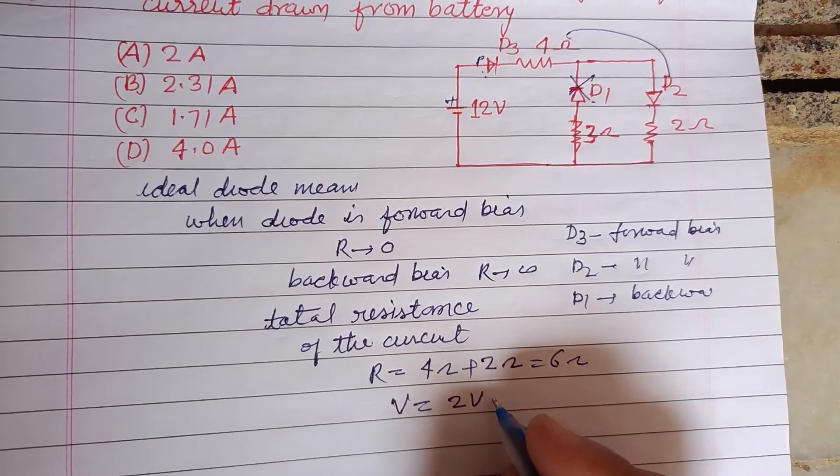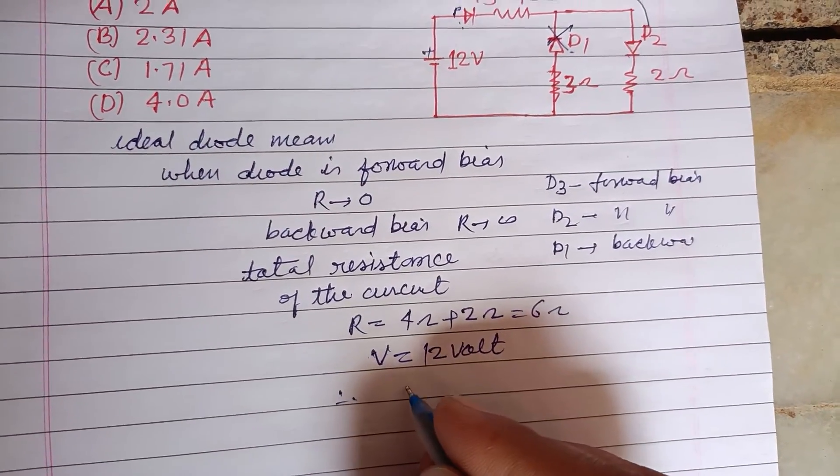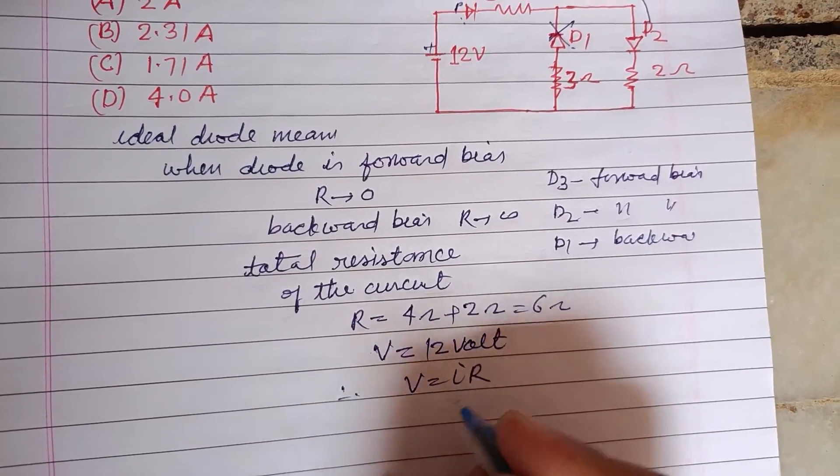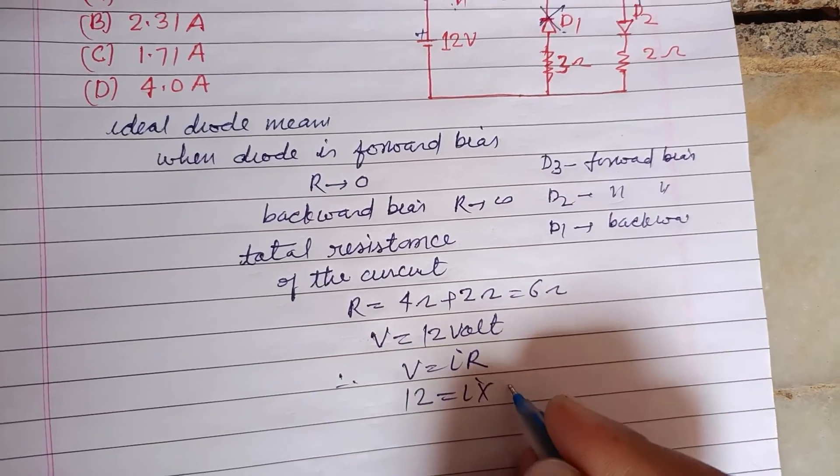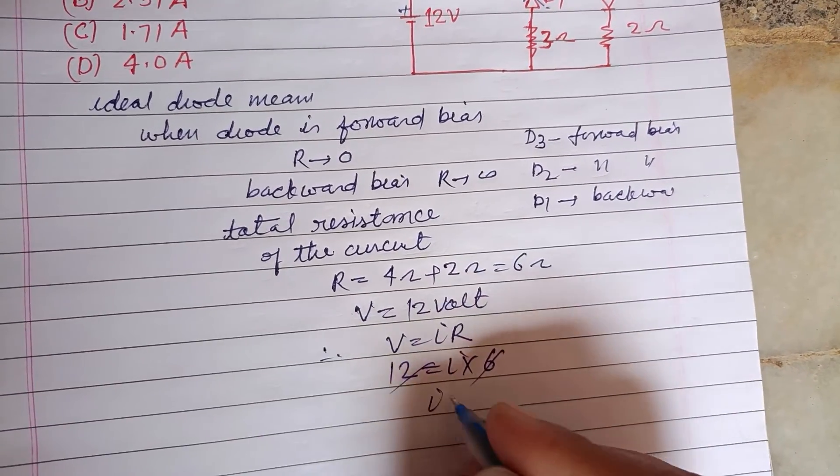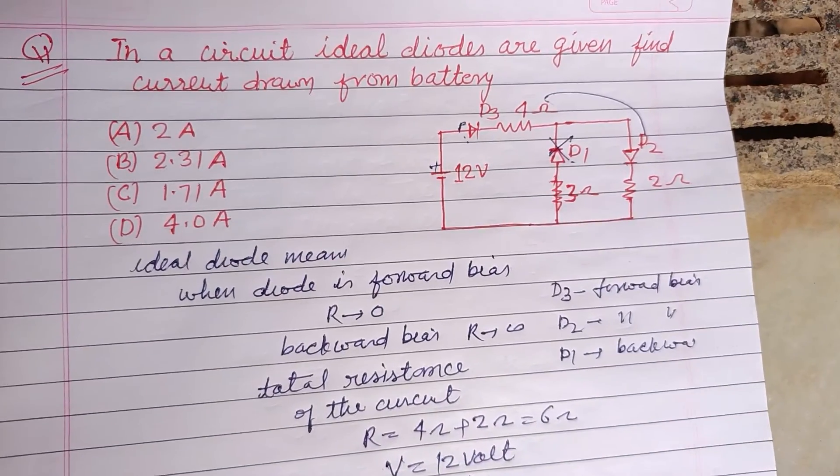Therefore current using Ohm's law, V equals IR, so V is 12, I into R is 6. 12 divided by 6, I equals 2 amperes.